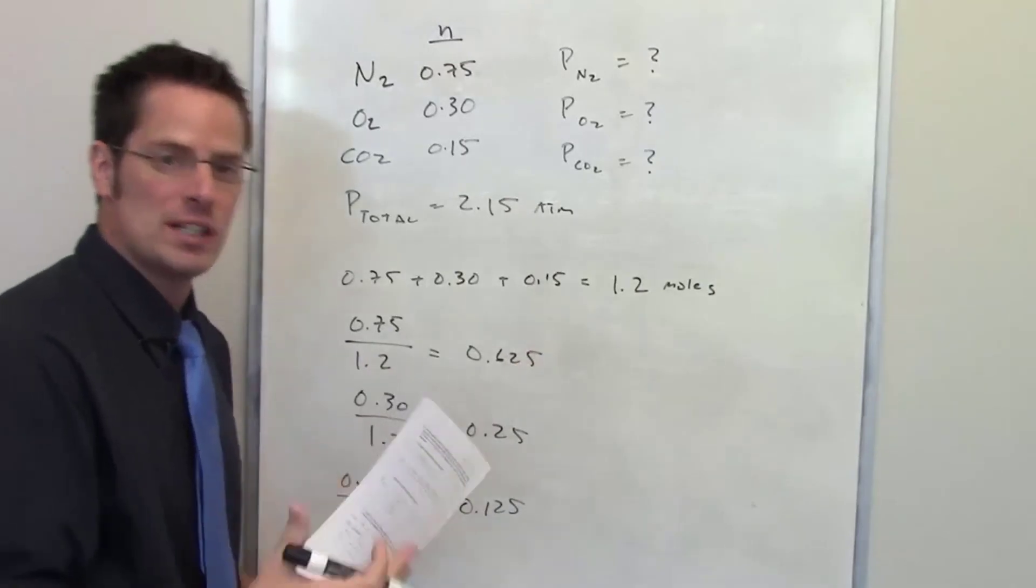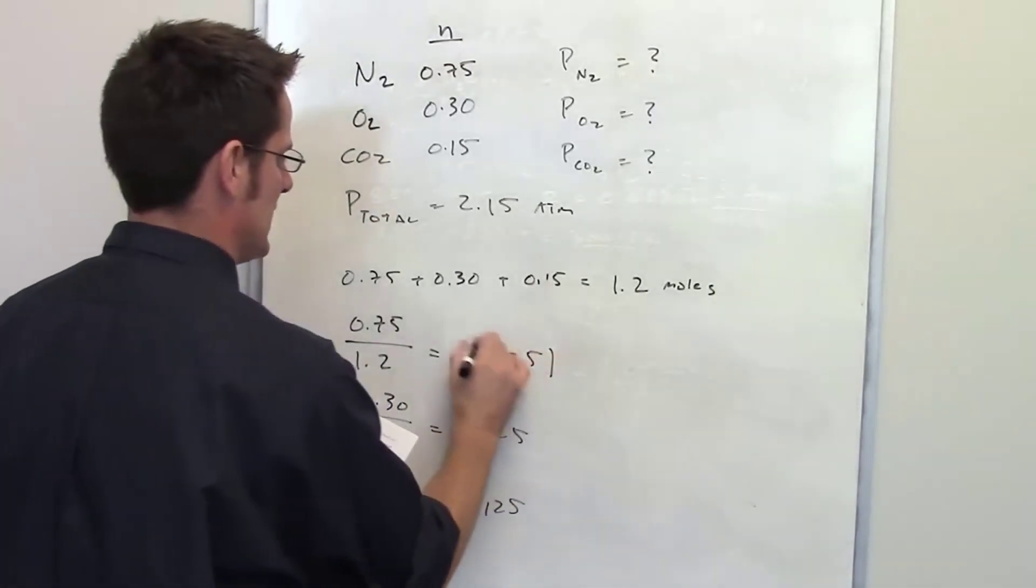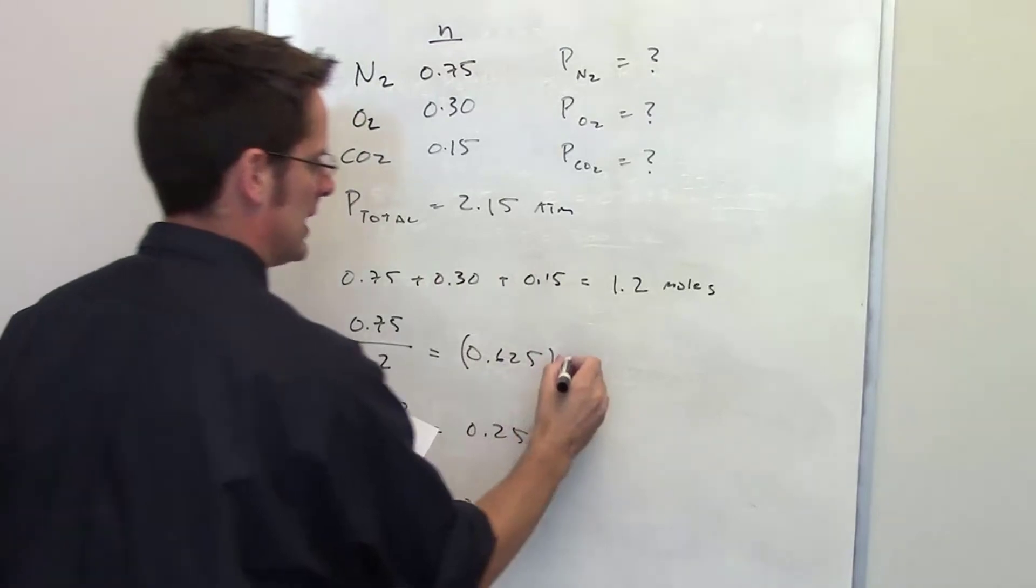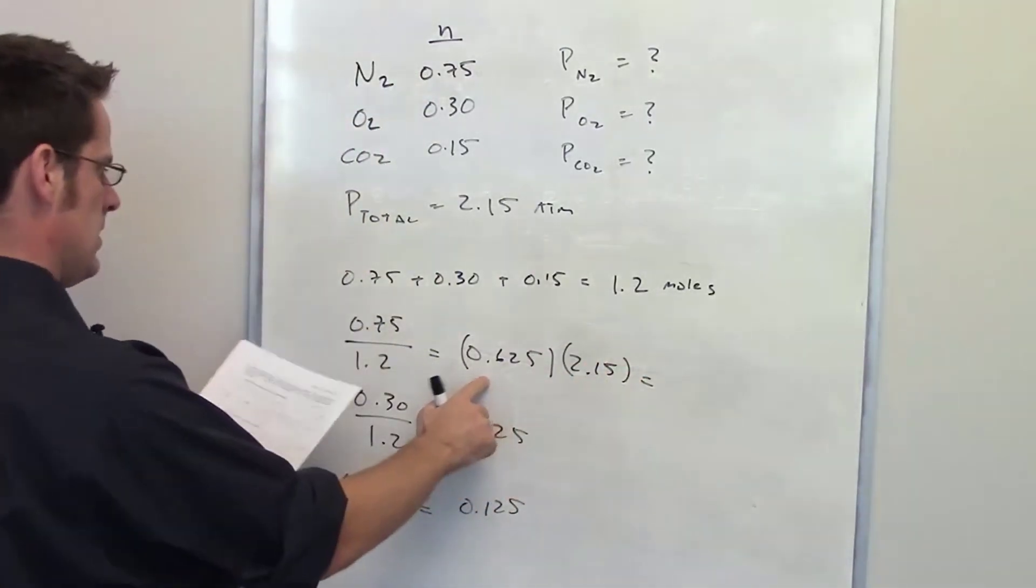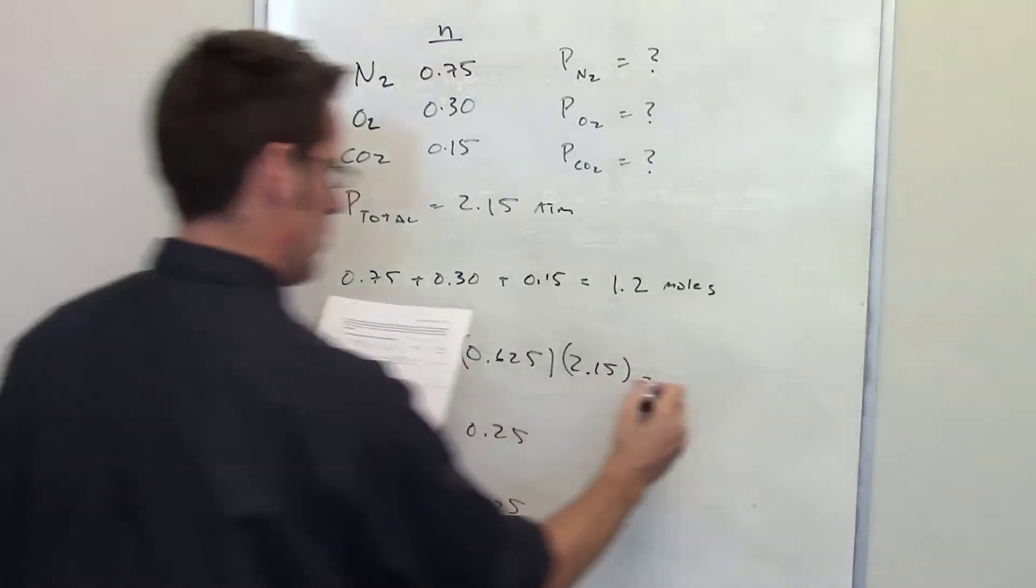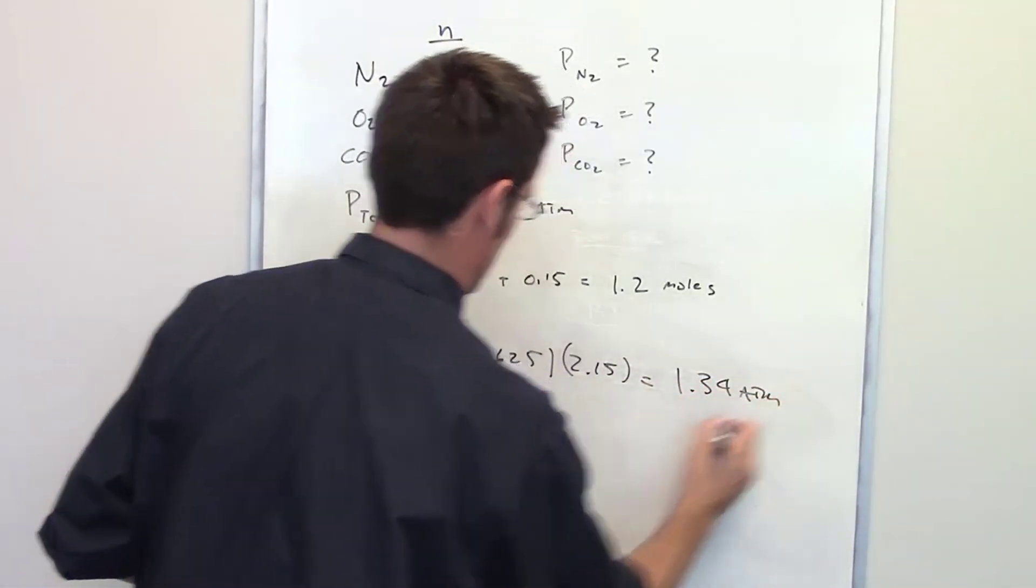To determine what pressure each of these is going to exert on the system, all I have to do is take these numbers and multiply it by the total pressure. So nitrogen is exerting 1.34 atmospheres on the total system.